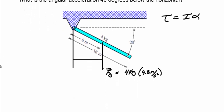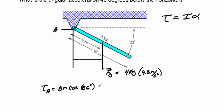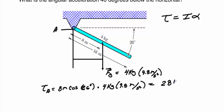I'll set this problem up and calculate the torque first. The torque around point A is going to be the distance from the pivot point, which is 8 meters, times the cosine of 26 degrees, times the force of gravity, which is 4 kilograms times 9.8 meters per second squared. That gives me a torque value of 281.86 newton meters.